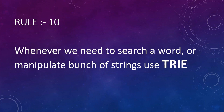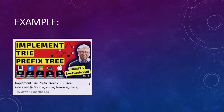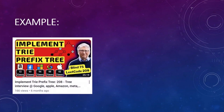Rule number ten, the final rule: whenever we are dealing with a problem involving word search, manipulating strings, maintaining a dictionary, or doing any kind of predictive search, most of the time we would be able to solve it using a trie or prefix tree. Keep this rule in mind because it is helpful for a wide variety of string-related questions, and there is an example provided for this rule.